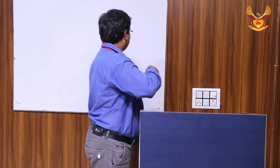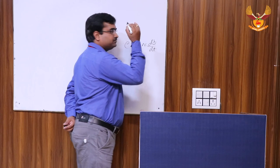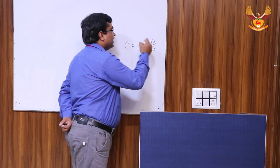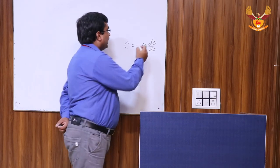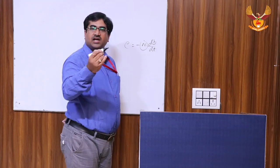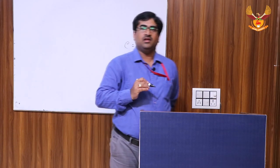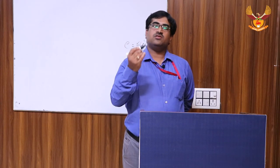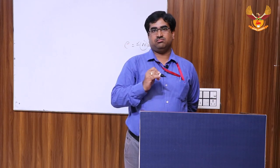Faraday's law is expressed as: E = −N dΦ/dt, where dΦ/dt is the rate of change of flux with respect to time, N indicates the number of turns in the conductor, and the negative sign indicates Lenz's law, which states that the induced EMF opposes the very cause that produced it.